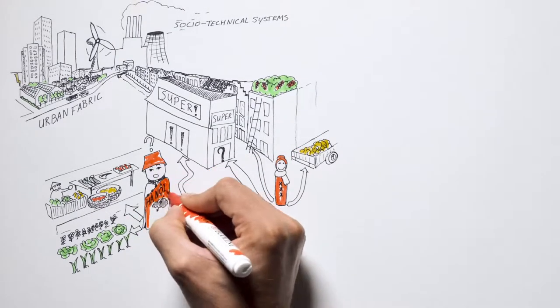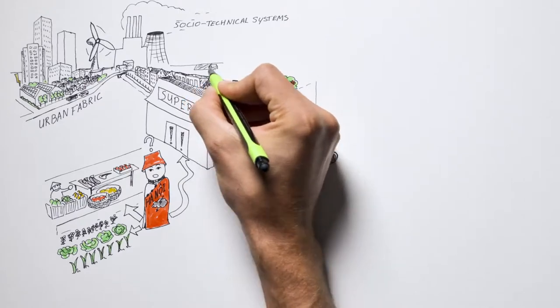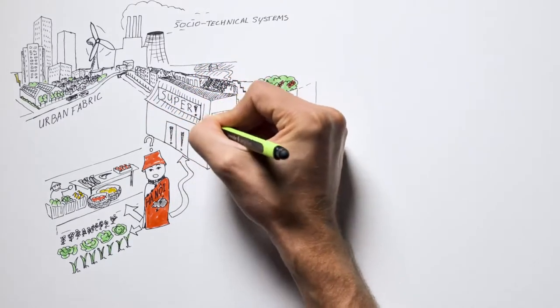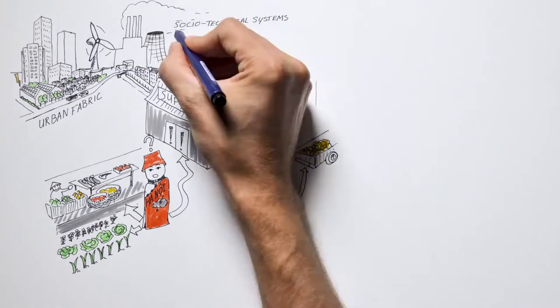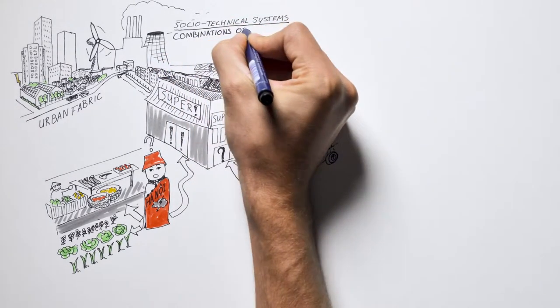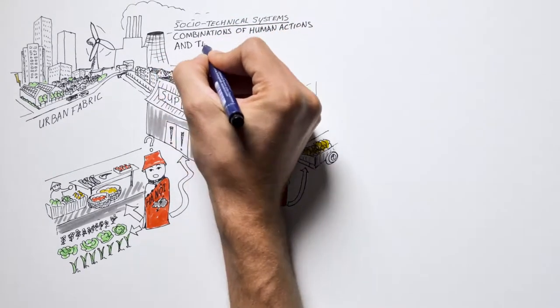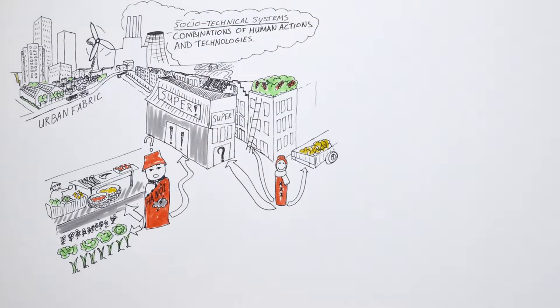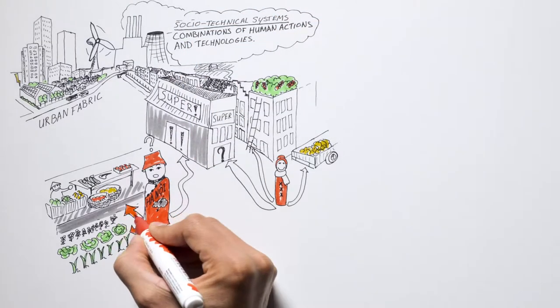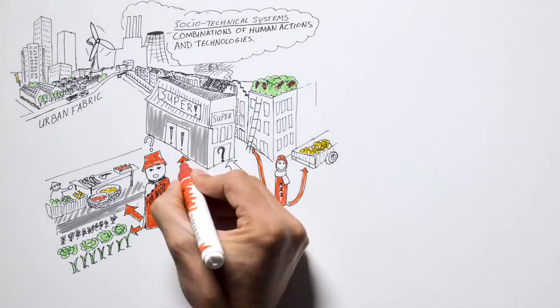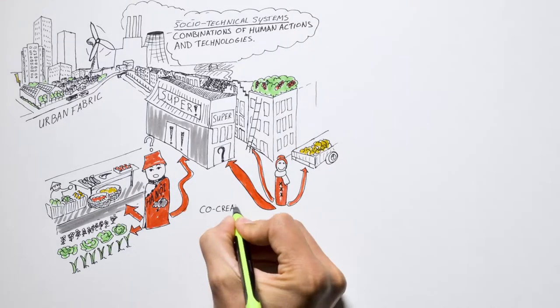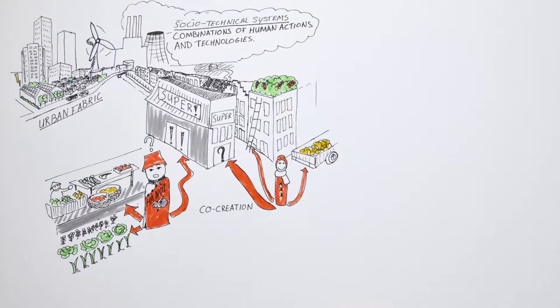These two Sams are involved in the food systems as socio-technical systems that are characteristic of their cities. Sociotechnical systems can be defined as combinations of human actions and technologies. Both Sams are just living their normal life, considering whether to follow their daily routines or not. In doing so, they co-create socio-technical systems in the urban fabric.